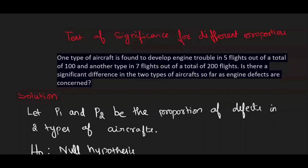In this video let's see problems based on test of significance for difference of proportions. Problem one: one type of aircraft is found to develop engine trouble in five flights out of a total of 100. The second type has engine trouble in seven out of 200 flights. We are given n1 and n2, so keep that in mind.